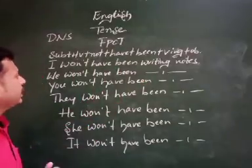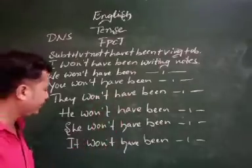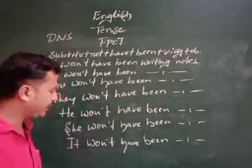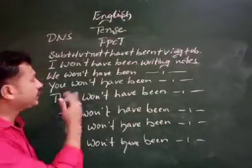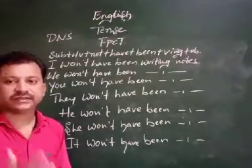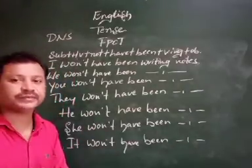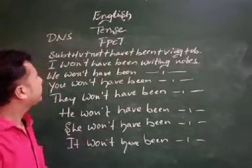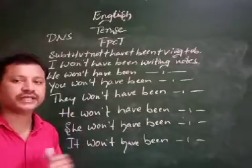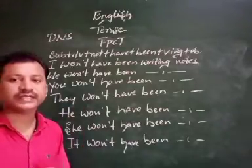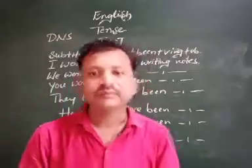These are all the statements using future perfect continuous tense in DNS form. Here we discussed DNS in present perfect, past perfect, and future perfect continuous tenses. This concludes the DNS form. The next concept is WNS. Thank you.